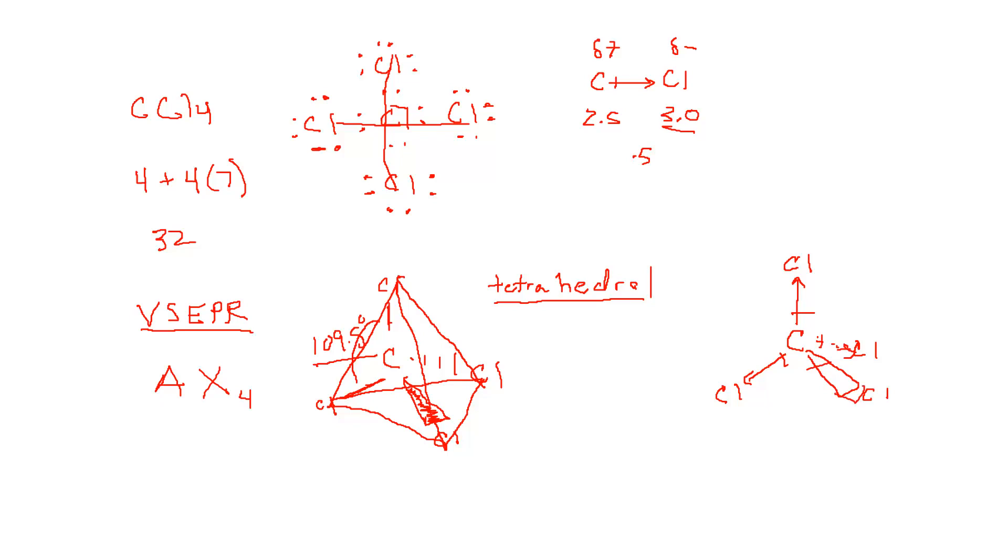The electronegativities, we know that these chlorines are pulling the electrons away from the carbon. We can write vectors like that, or the partially negative charge on each one of the chlorines. That means a partially positive on the carbon. This is coming from evaluating each bond plus the geometry, putting that all together.